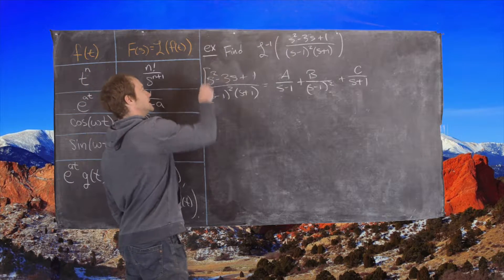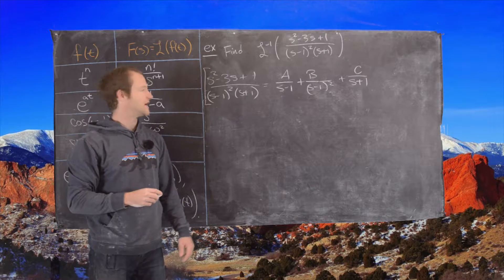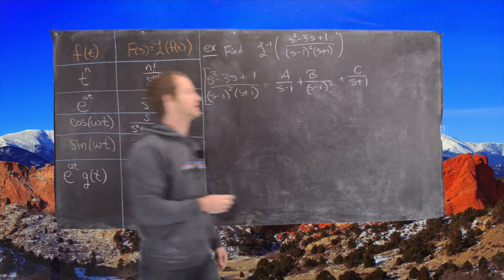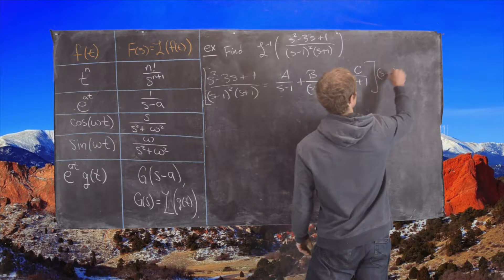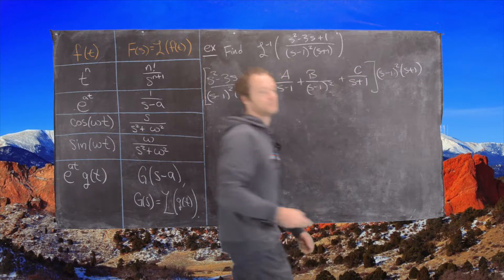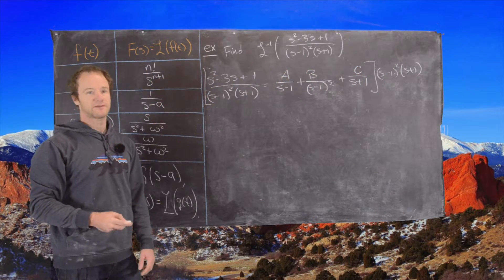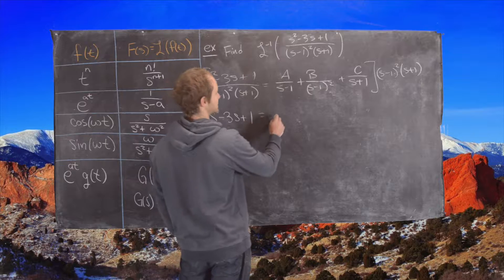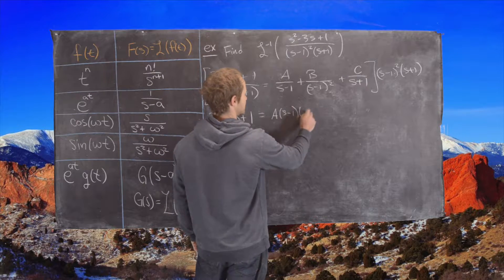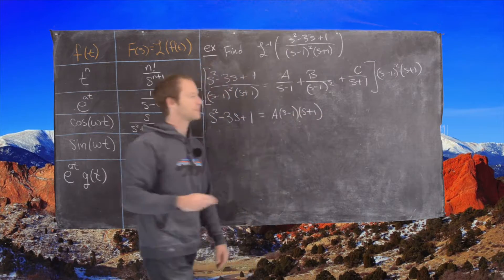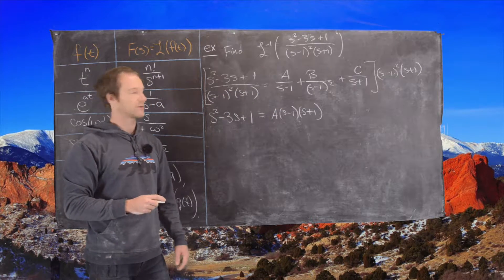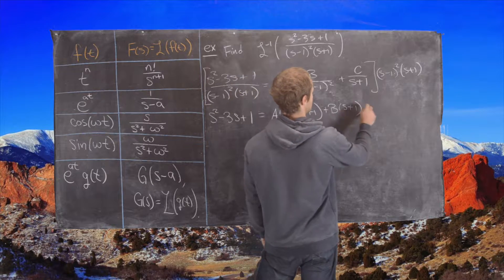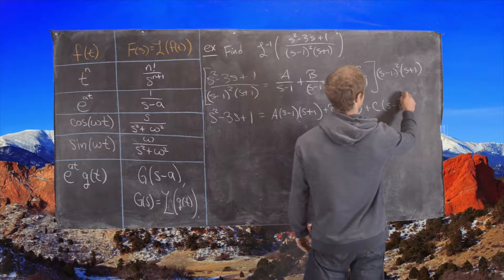Now we multiply this entire equation by s minus 1 squared times s plus 1, and that will have a nice simplification effect. That leaves the left-hand side really nice: s squared minus 3s plus 1 equals A times s minus 1 times s plus 1 — that's what's left after distributing that term through.